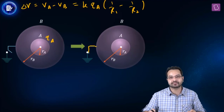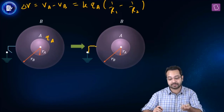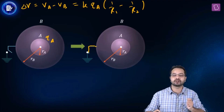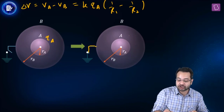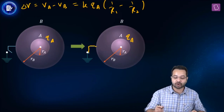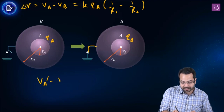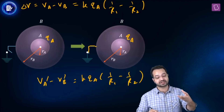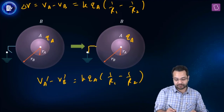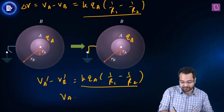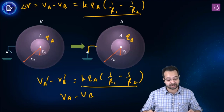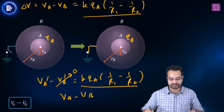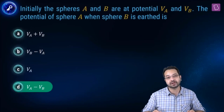Now look at conductor A — it is an isolated conductor, meaning it is not connected to any external point. The charge on an isolated conductor does not change, so the charge on A is still QA. The potential difference VA′ minus VB′ equals K·QA·(1/R1 − 1/R2) because it does not depend on the charge on shell B. So the potential difference is still VA minus VB. Since VB′ = 0, the new potential of A is VA minus VB. Option D is the right answer.